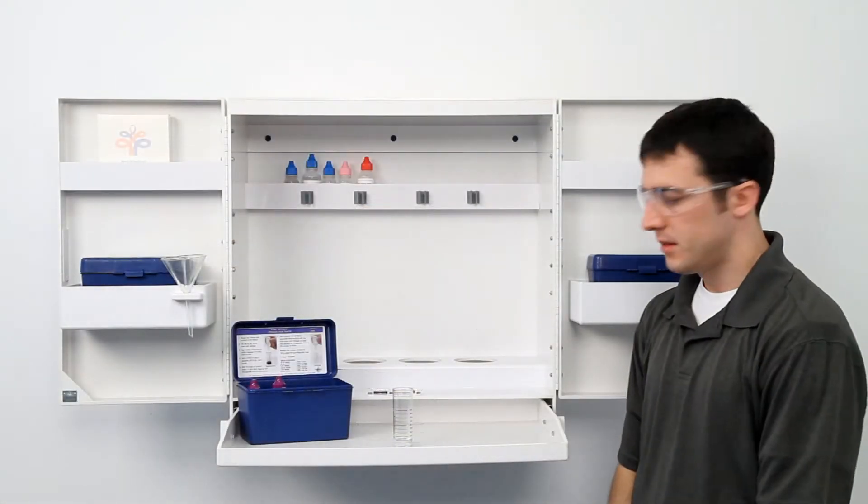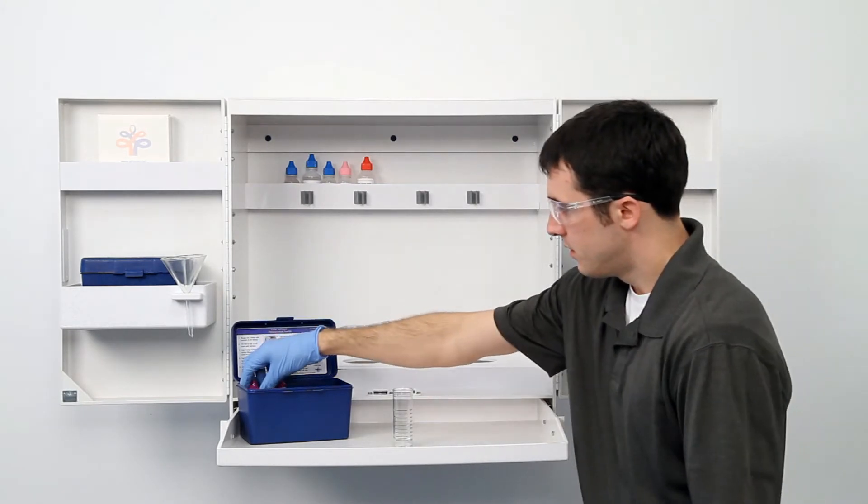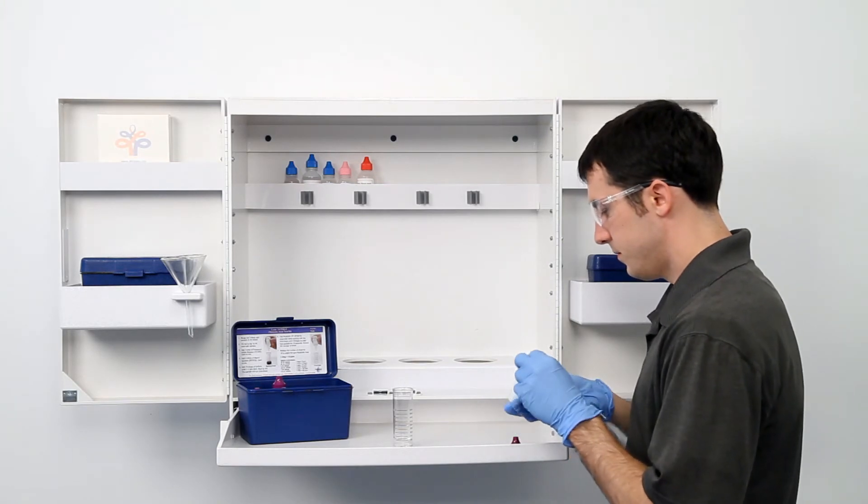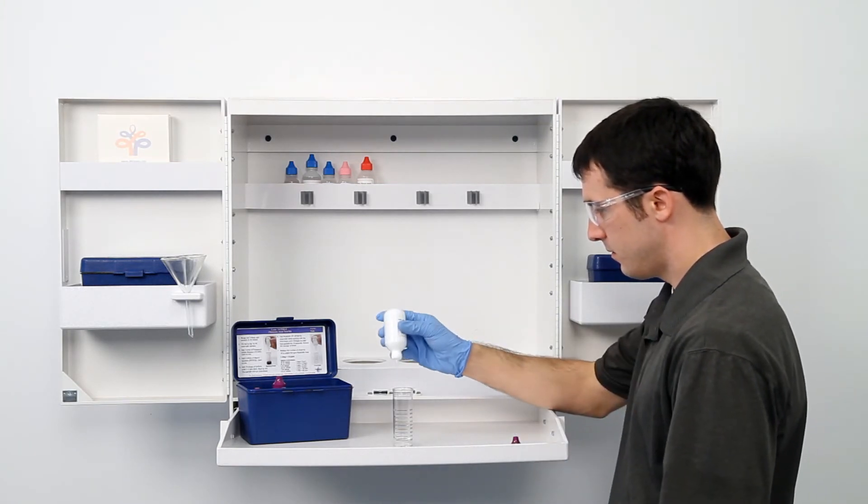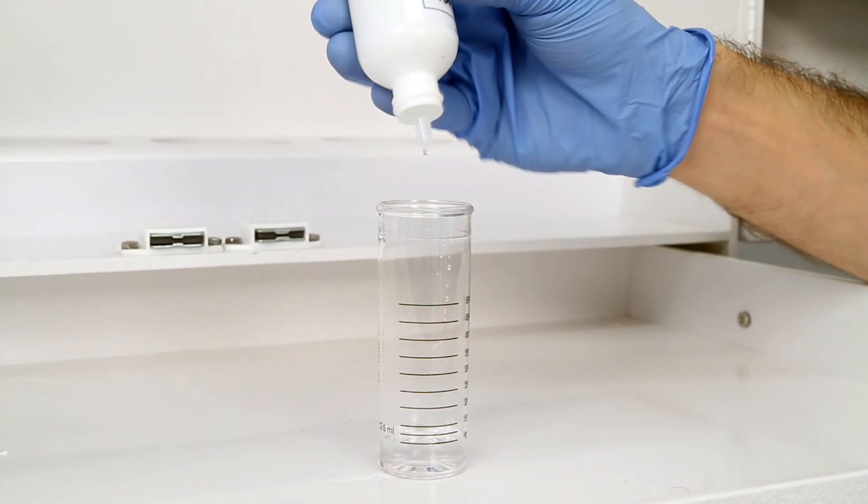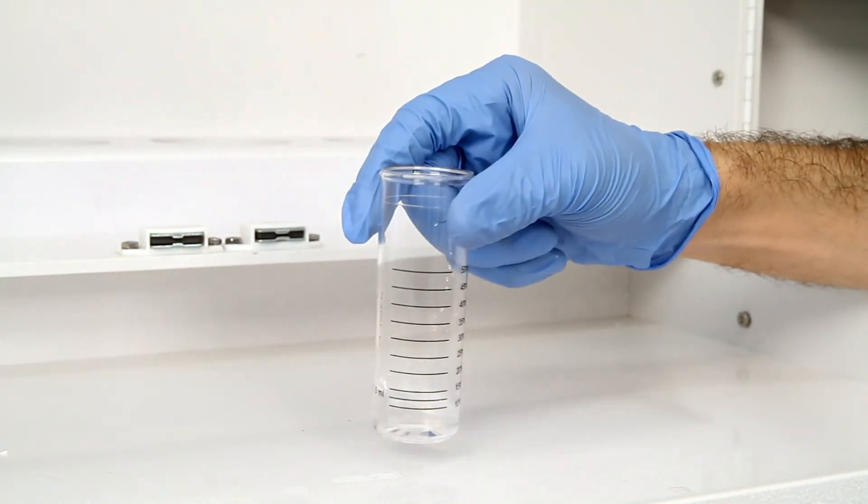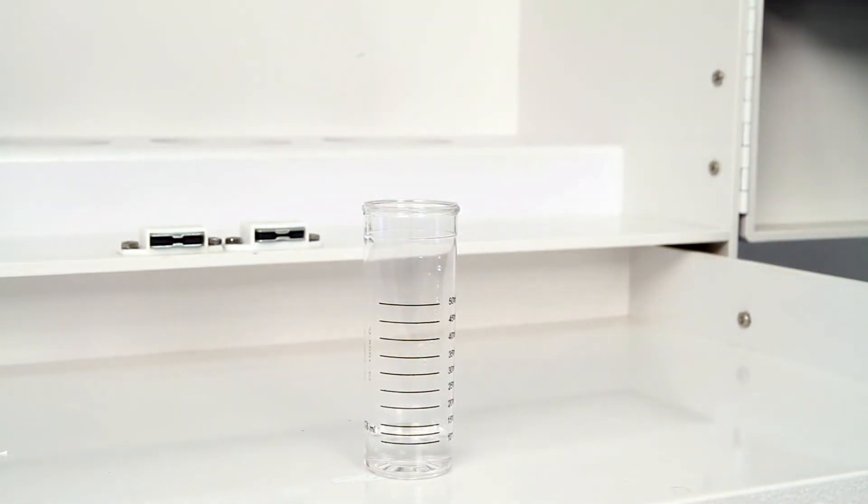The next step according to the endpoint ID procedure is to add one drop of potassium iodide. The bottle contains a dropper tip, so it's important to hold the bottle vertically to get a consistent drop size. After the addition of each reagent, it's important to swirl the vial to make sure the reagents are properly mixed.